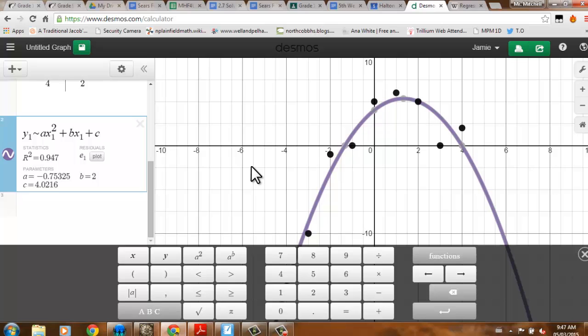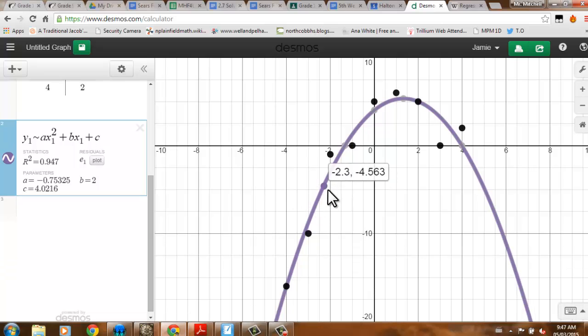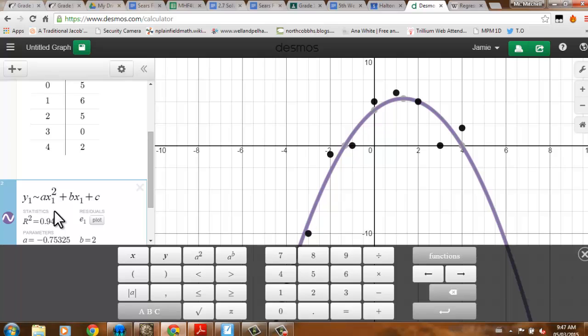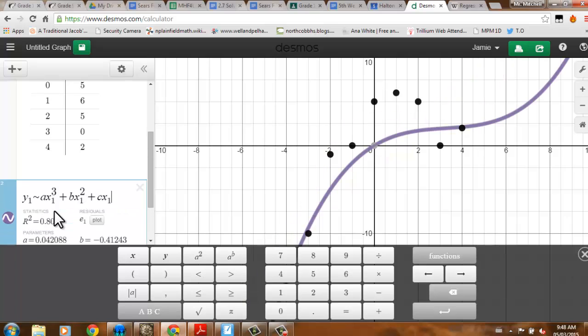My r-squared value is 0.947. That's pretty close. I can then, if I want to, use Desmos by clicking and dragging to find values like the x-intercepts. Tell me the vertex of this function. But maybe I know my data is not supposed to be quadratic. Maybe it's supposed to be cubic. I can change these values: ax1 cubed plus bx1 squared plus cx1 plus d.